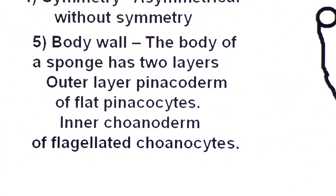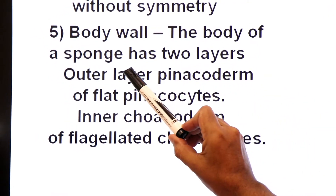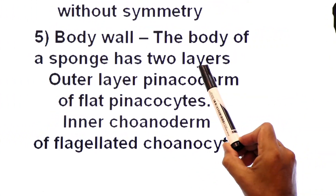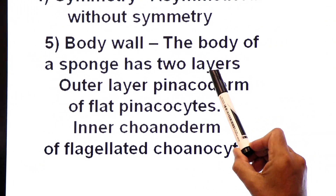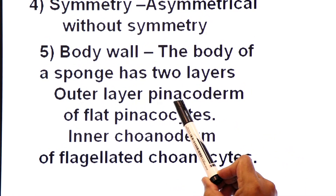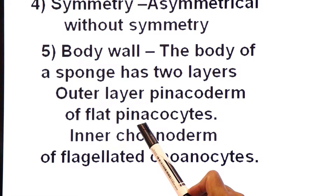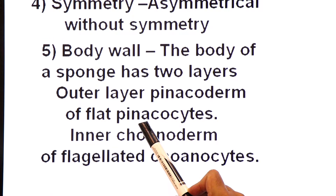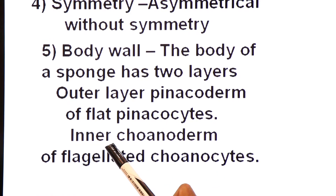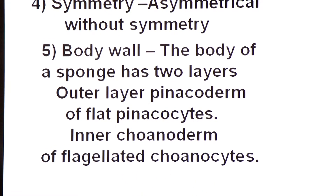The body wall of the sponge has two layers, outer and inner. The outer layer is called pinacoderm because it is made up of flat cells called pinacocytes. The inner layer is called choanoderm and it is made up of flagellated cells called choanocytes.